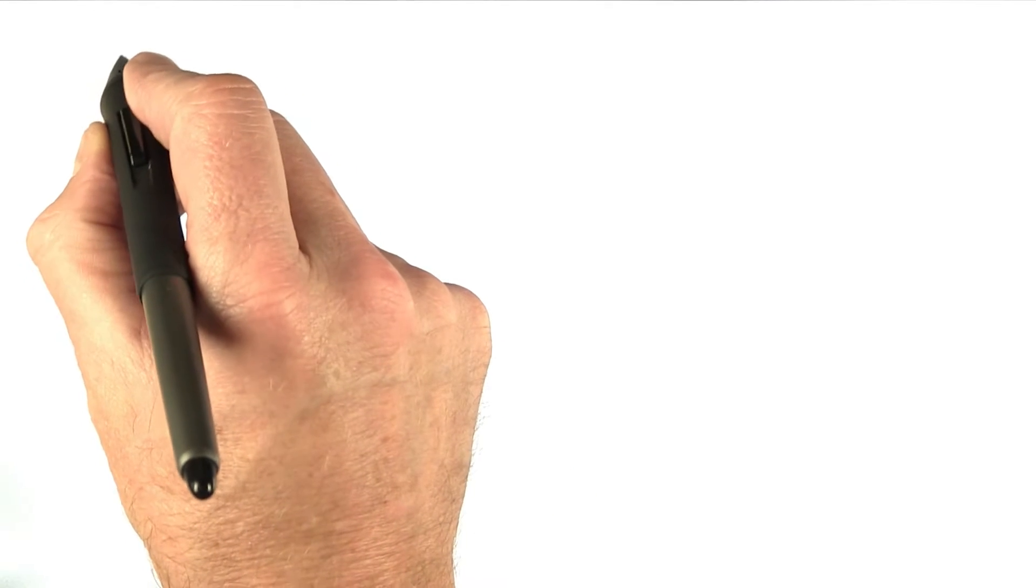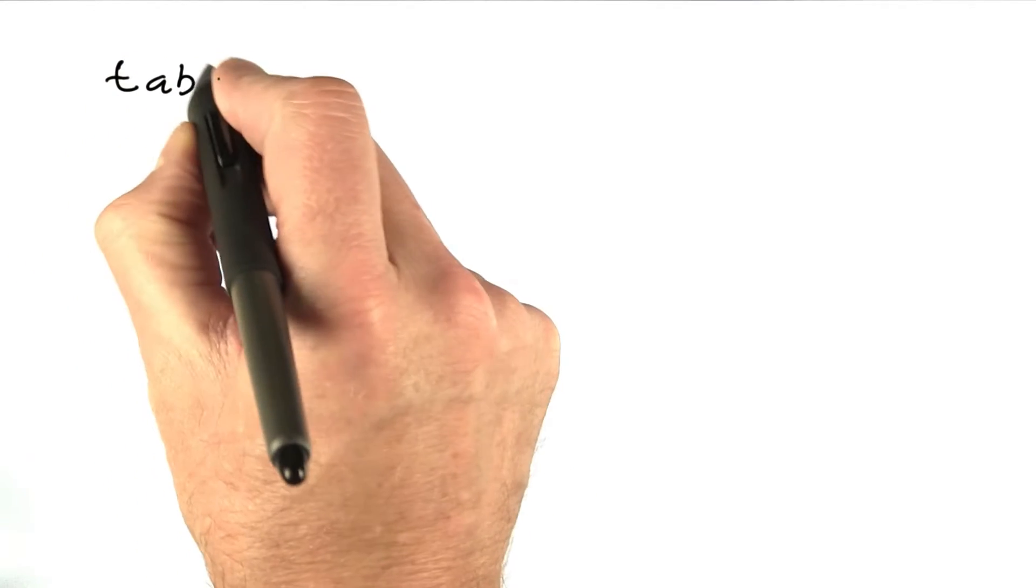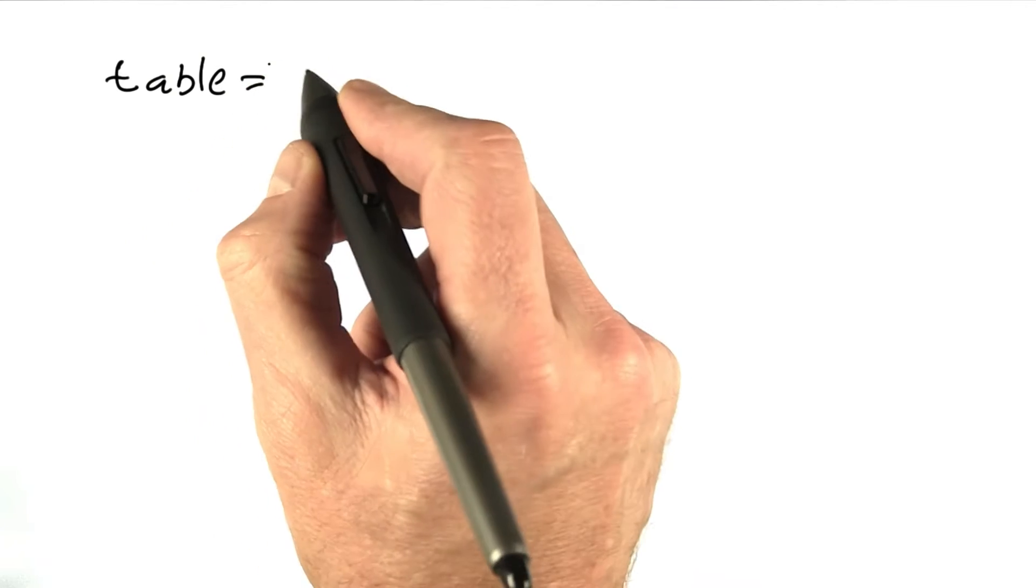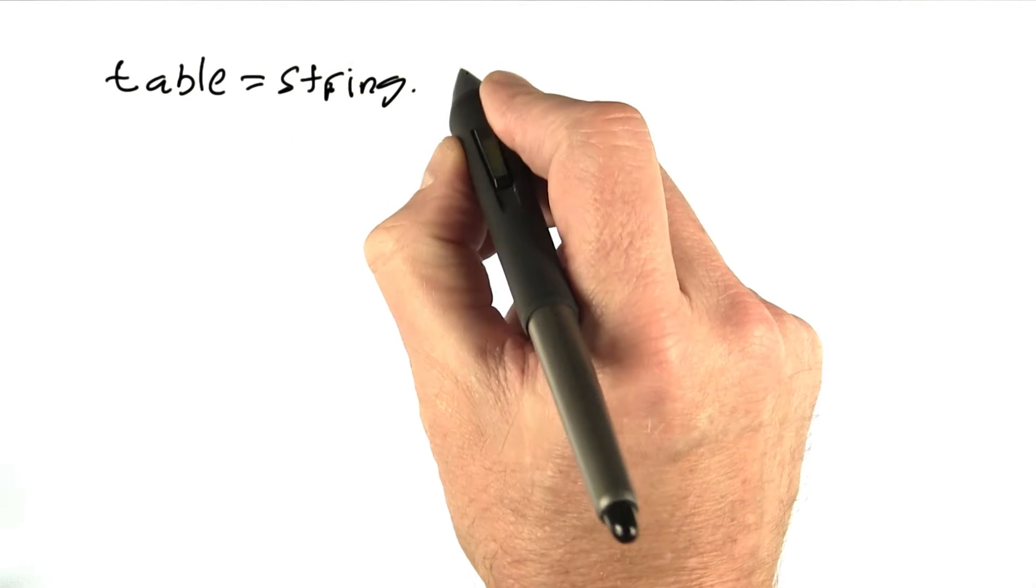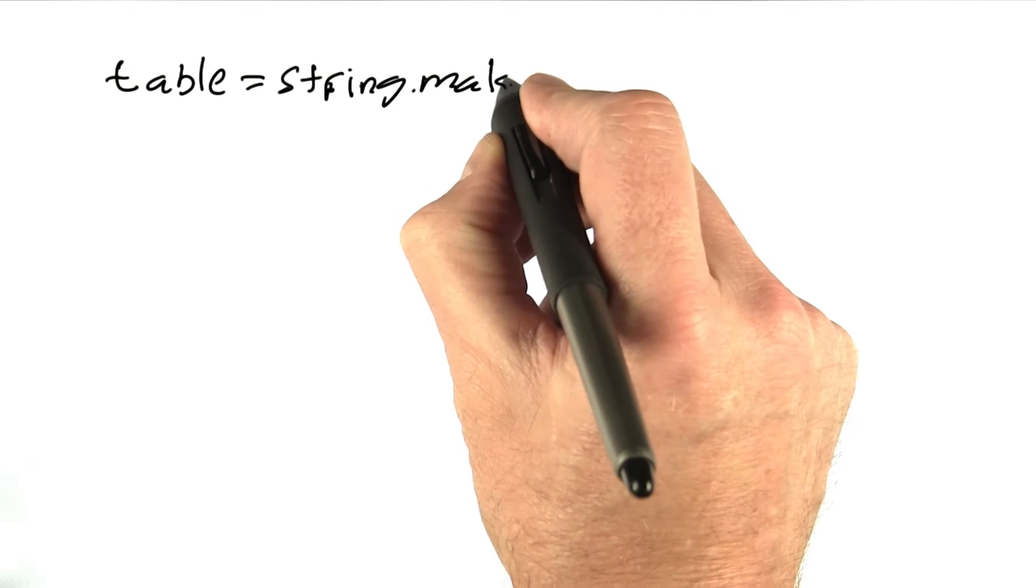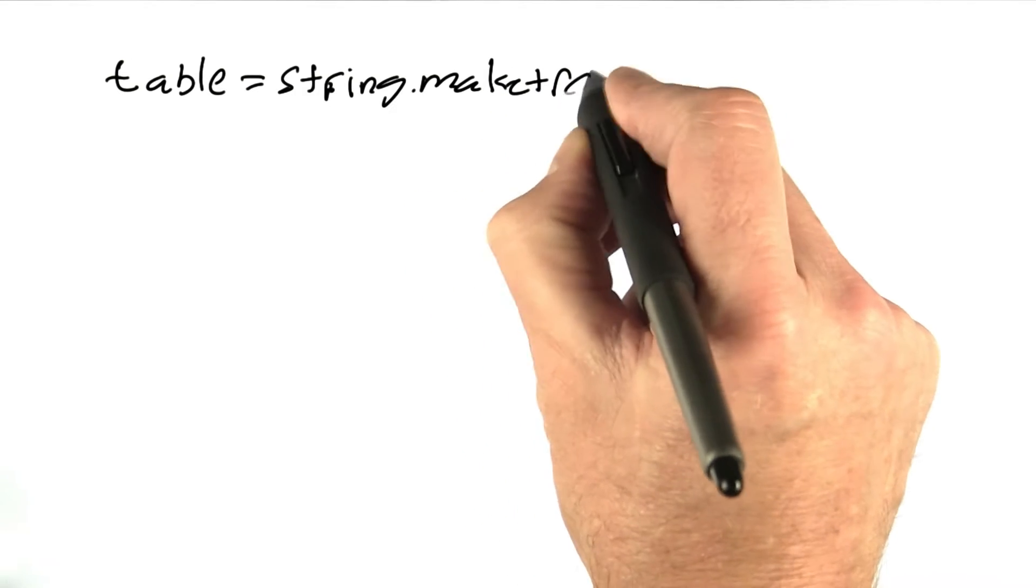Now I'm going to show you how these translation tables work. So I'm going to define a variable called table that's using the string.maketrans function, which makes a translation table.